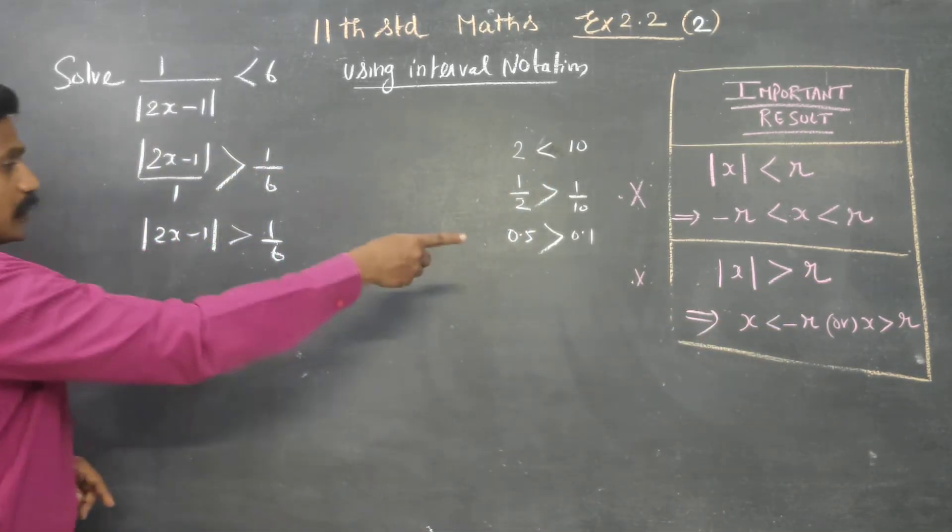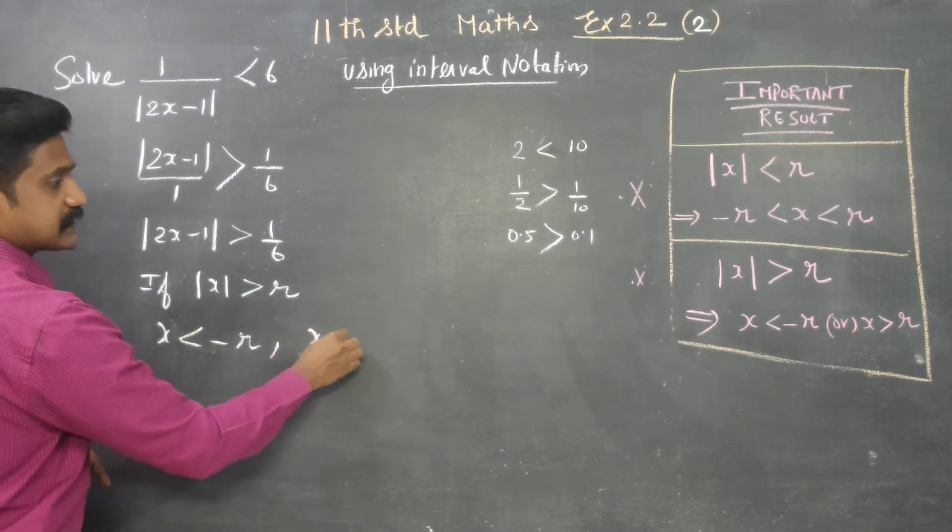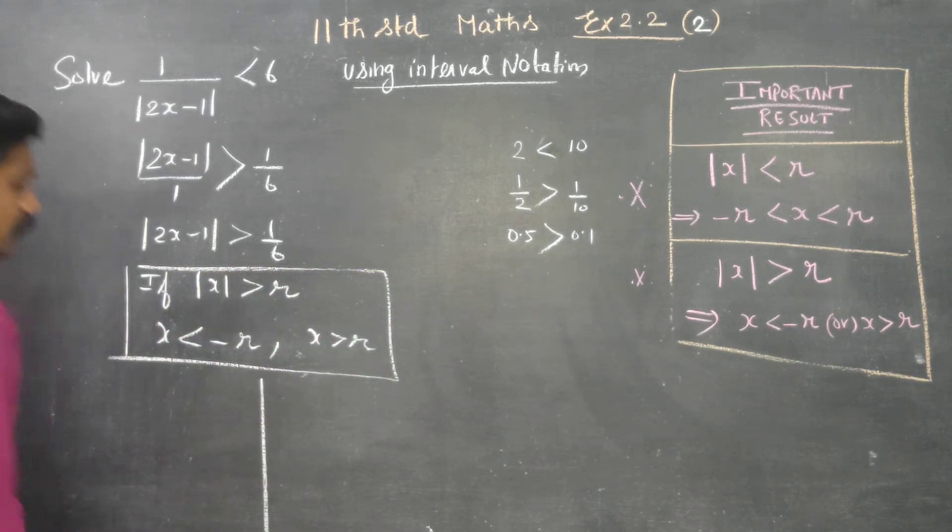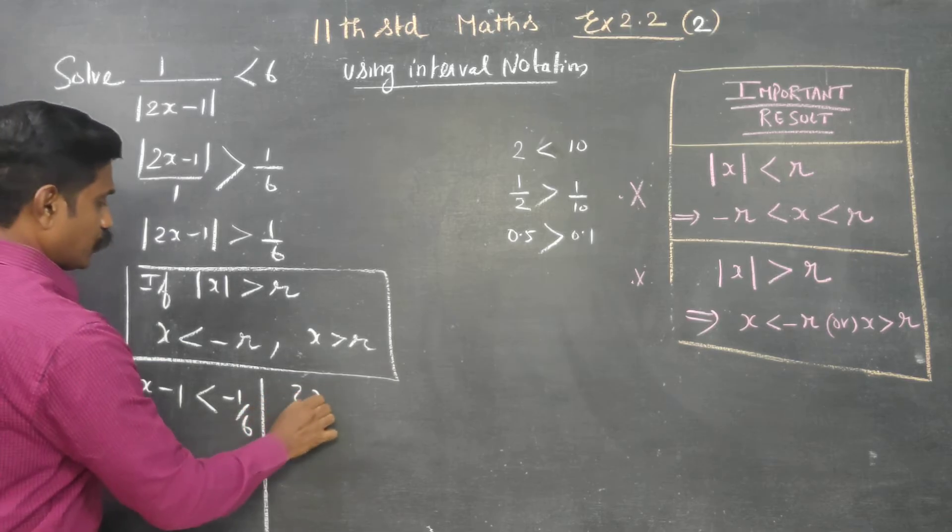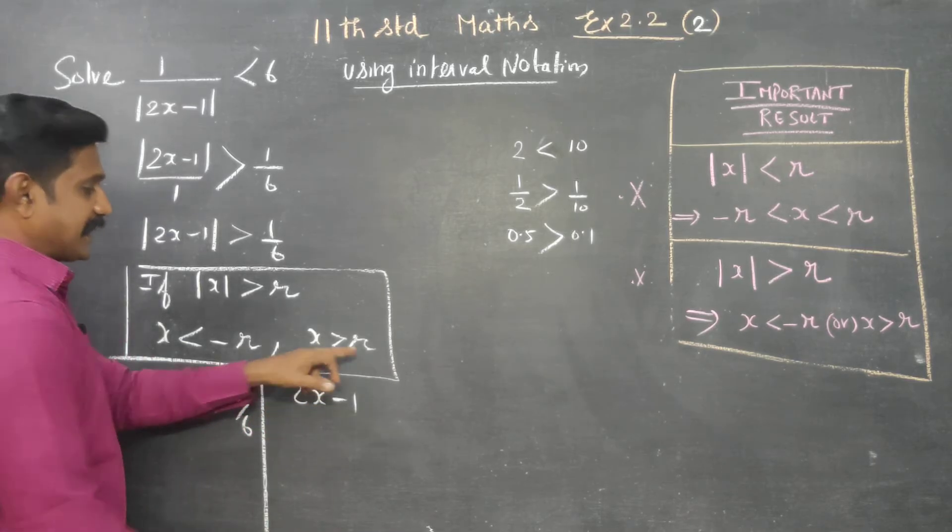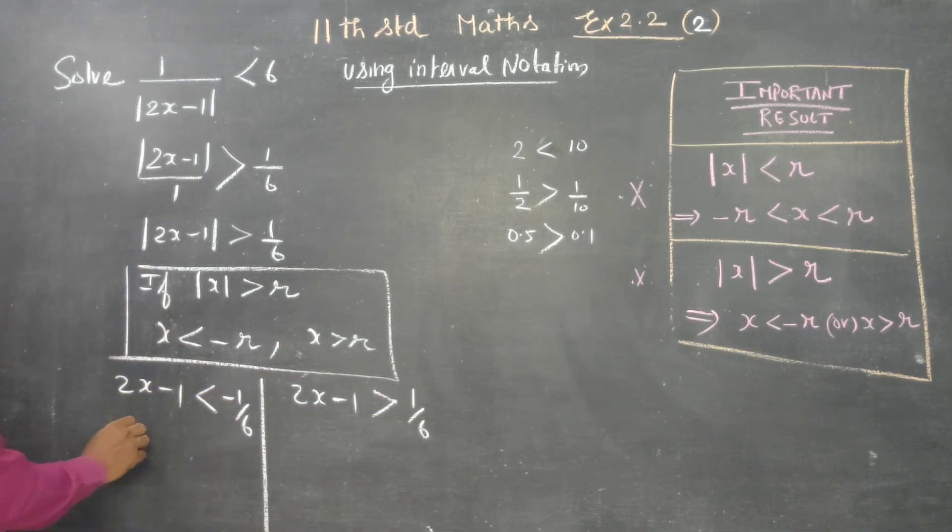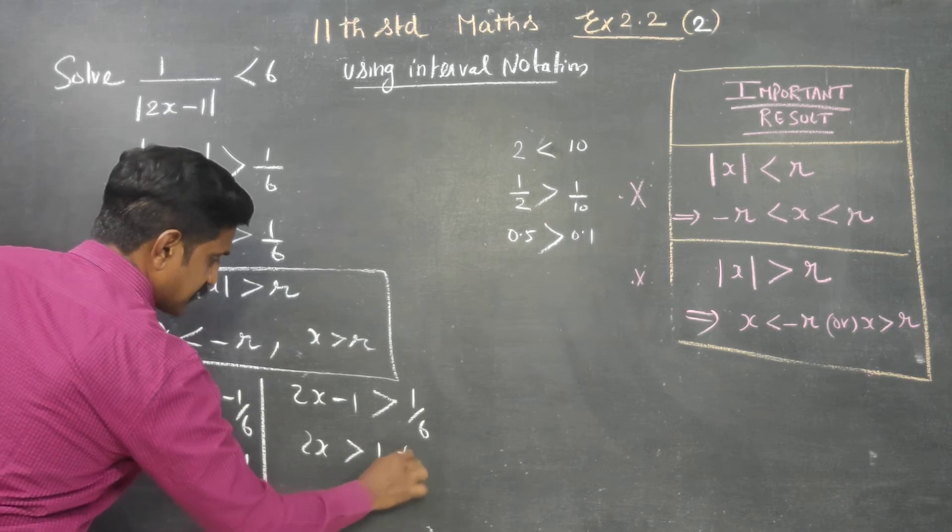Greater than 1 by 6 means the rule is: if |x| is greater than r means x is less than minus r, or x is greater than plus r. Using this rule, 2x minus 1 is less than minus 1 by 6, or 2x minus 1 is greater than 1 by 6. Then, 2x less than minus 1 by 6 plus 1, and 2x greater than 1 by 6 plus 1.